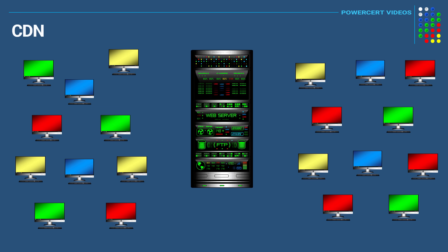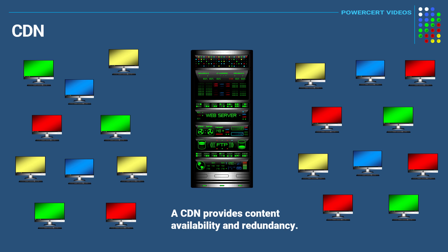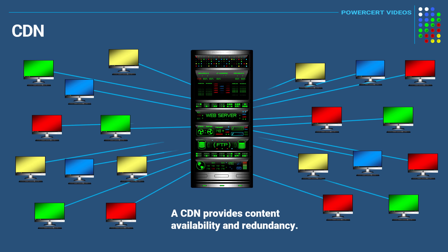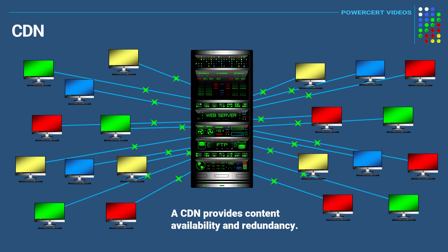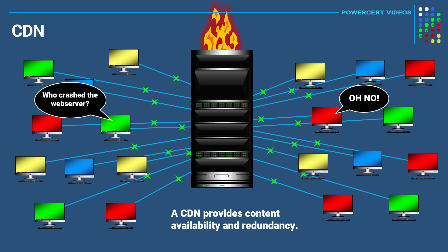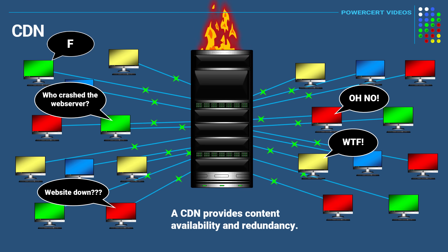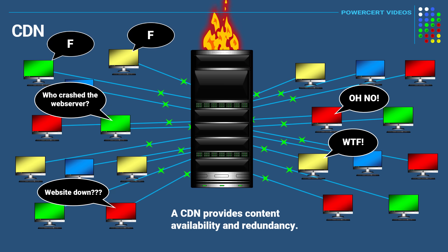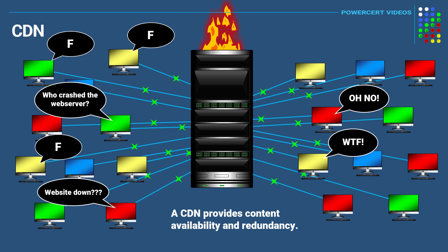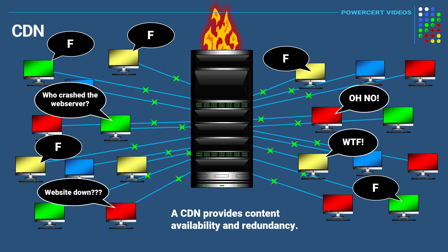That leads us to another benefit of a CDN, which is content availability and redundancy. Because when you have a large number of users connecting to a web server, the server may not be able to handle that amount of traffic and it could cause it to crash. Or if there was a hardware failure, that would also cause the website to be unavailable. But a CDN can help reduce the number of users connecting to the origin web server by having the users connect to the edge servers instead.